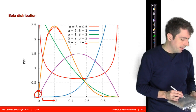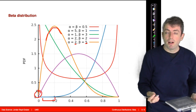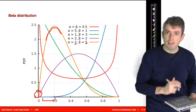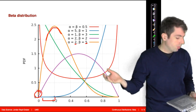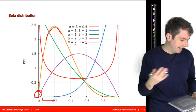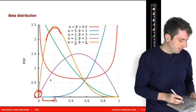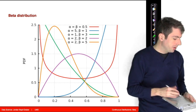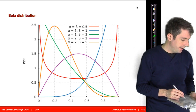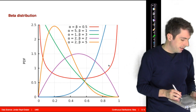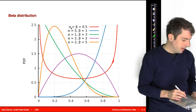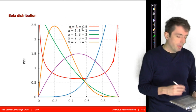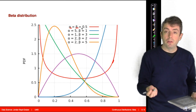As you get close to zero the probability gets very, very small — it's going to be a small number, probably less than 0.4. Other parameter settings are more interesting. For example, the red line here corresponds to alpha and beta both being equal to 0.5.